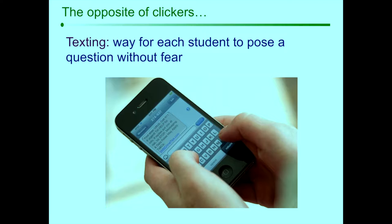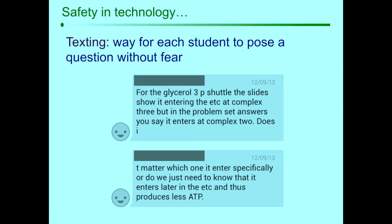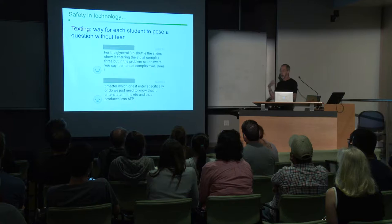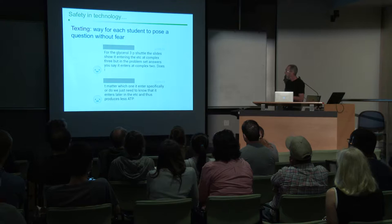Just like clicking is a way for each student to answer a question that's posed to them, texting is a way for each student to pose a question without fear and semi-anonymously. One of the great things about it is the safety it provides. Here's an example of an actual question I got texted: 'The slides show the glycerol-3-phosphate shuttle entering the electron transport chain at complex three, but the problem set answers say it enters at complex two. Does it matter which one specifically, or do we just need to know?' You can see it can be very information-dense.